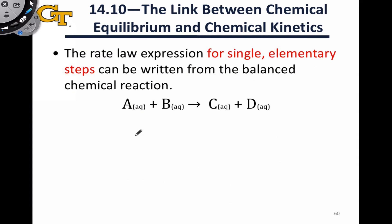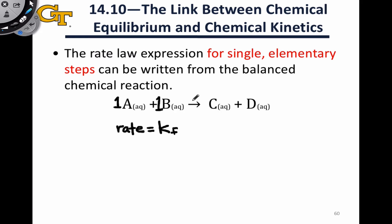For an elementary step, we can write the rate law directly using the stoichiometric coefficients on the reactants in the balanced chemical equation. So if we think about a hypothetical reaction in which one mole of A reacts with one mole of B to form one mole of C and one mole of D, as long as we know already that this is an elementary step, we can write the rate law straight away. The rate law for the forward reaction is Kf — using F to represent the forward direction — times the concentration of A raised to the first power, times the concentration of B raised to the first power, where those exponents come from the stoichiometric coefficients.